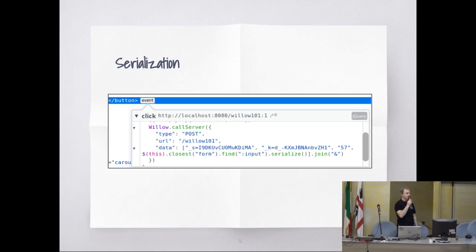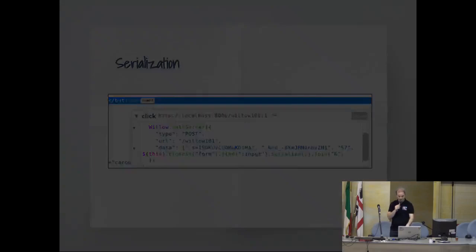The AJAX code is converted to a POST type, because if you have a large form, it does not fit in query parameters. So it's easier to always do a POST. In the second part, you can see it finds the closest form and serializes all the inputs.